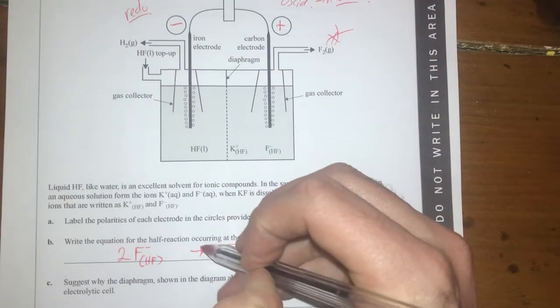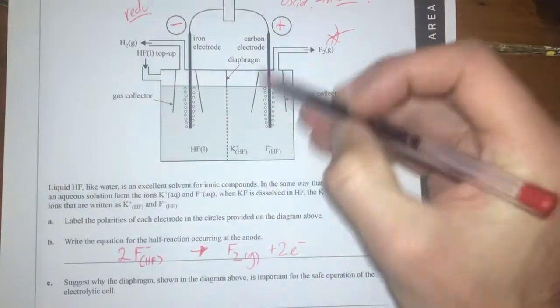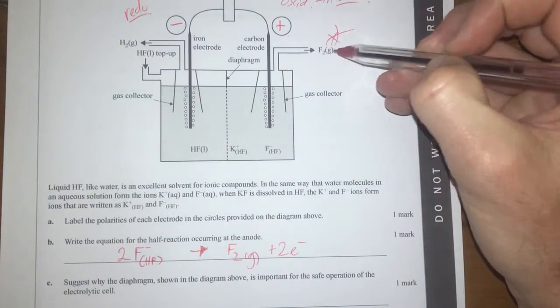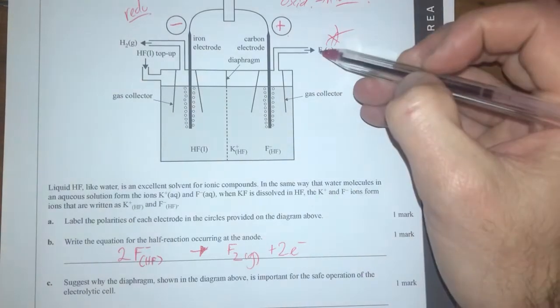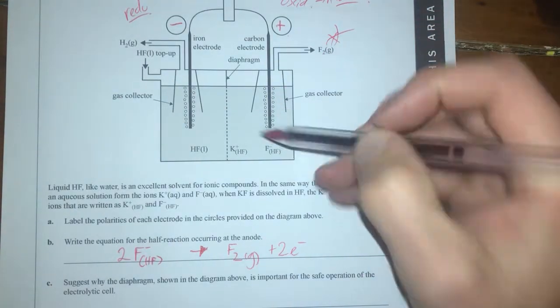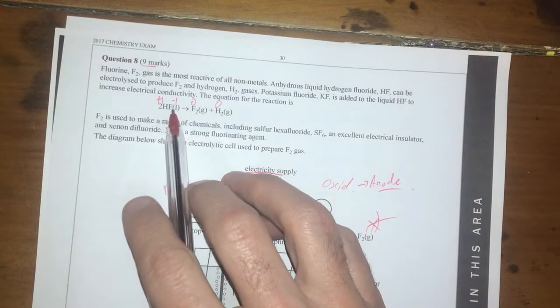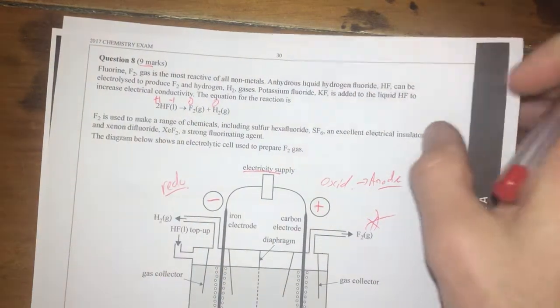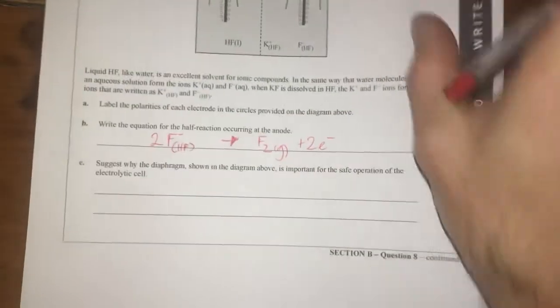Again just thinking about that what I did is I looked at what was being produced at my anode and I can copy that straight across there and then I can work backwards to work where that came from. You can also see it from here so fluorine is coming from this F- ion down there. Moving on.